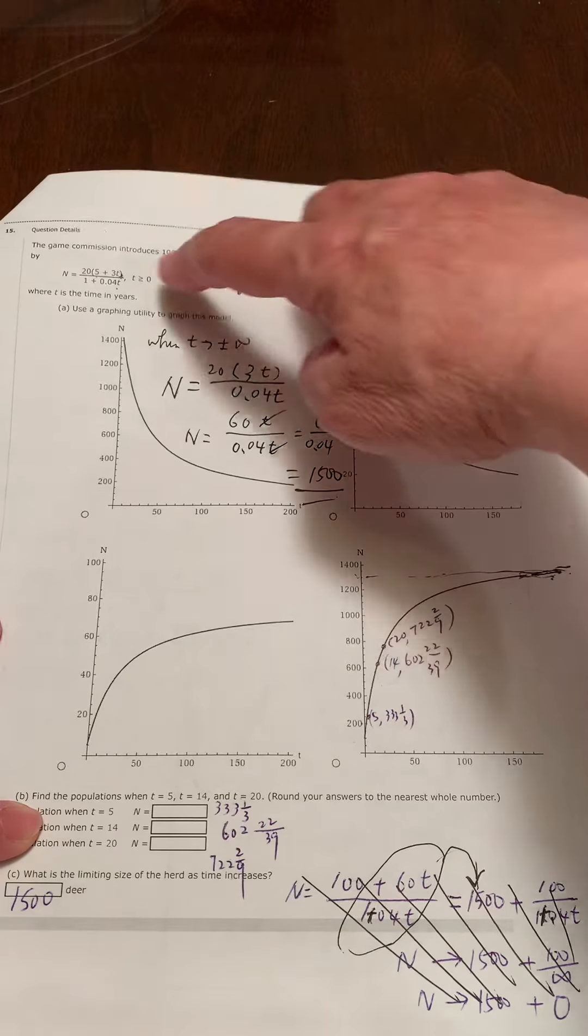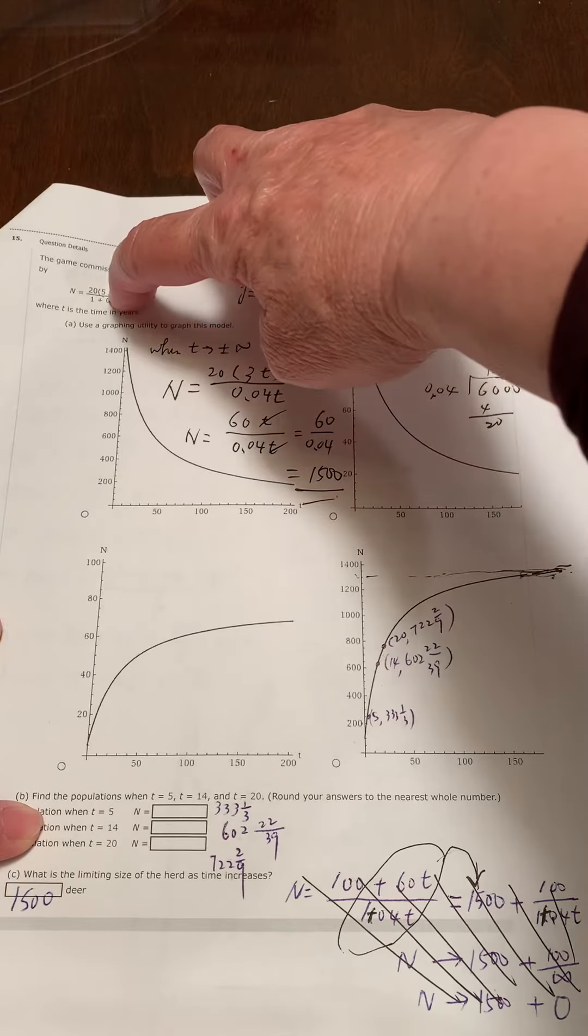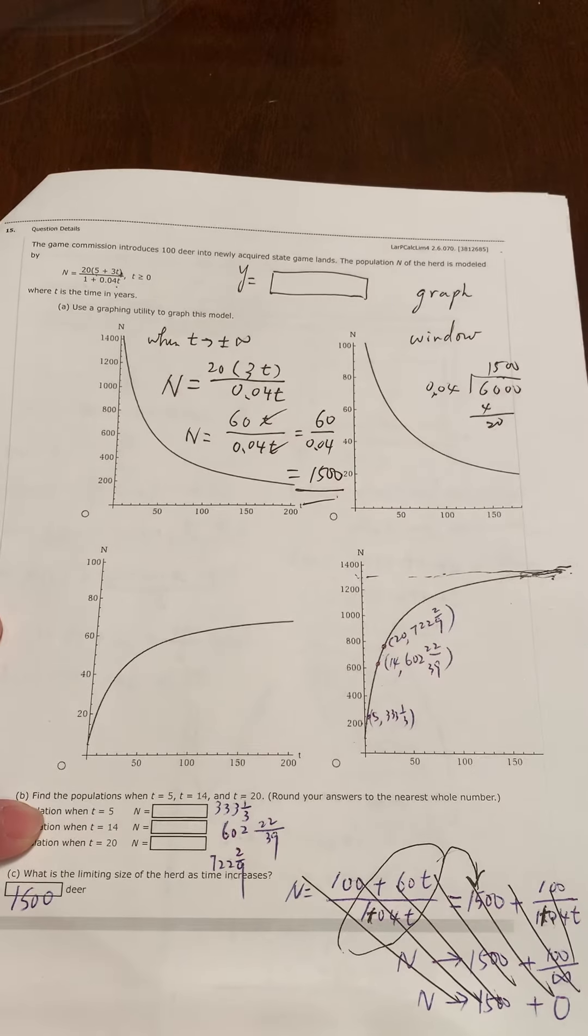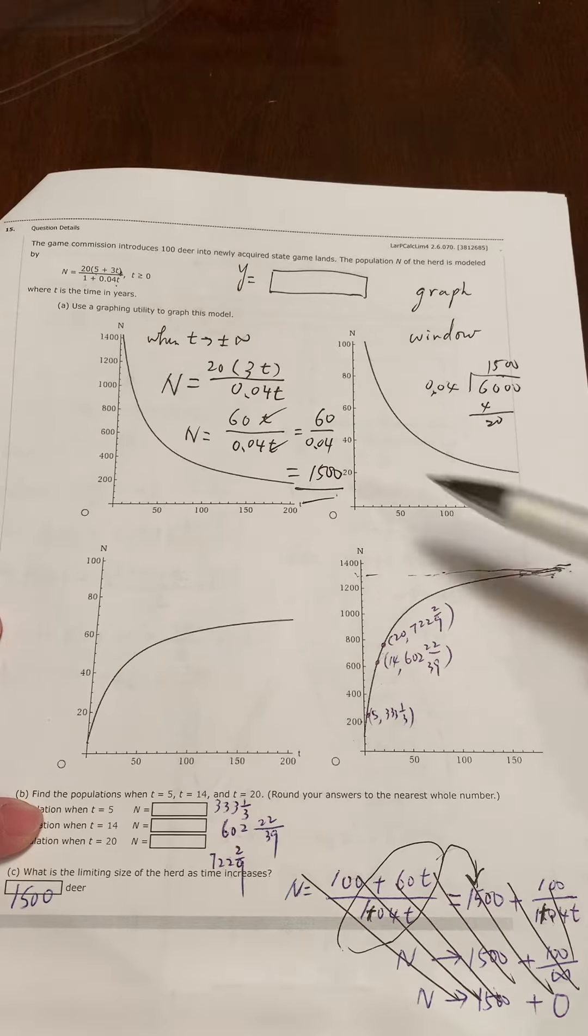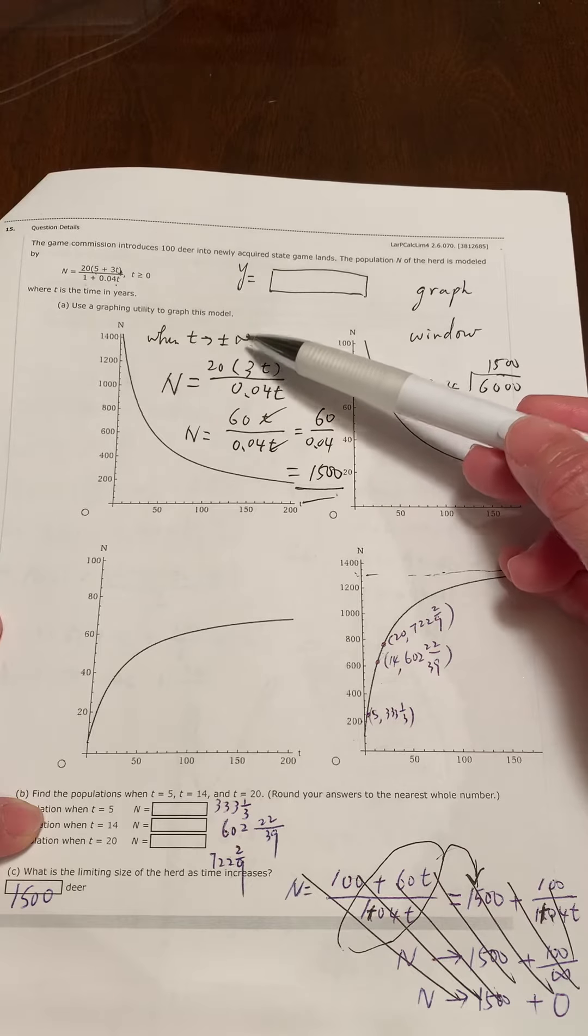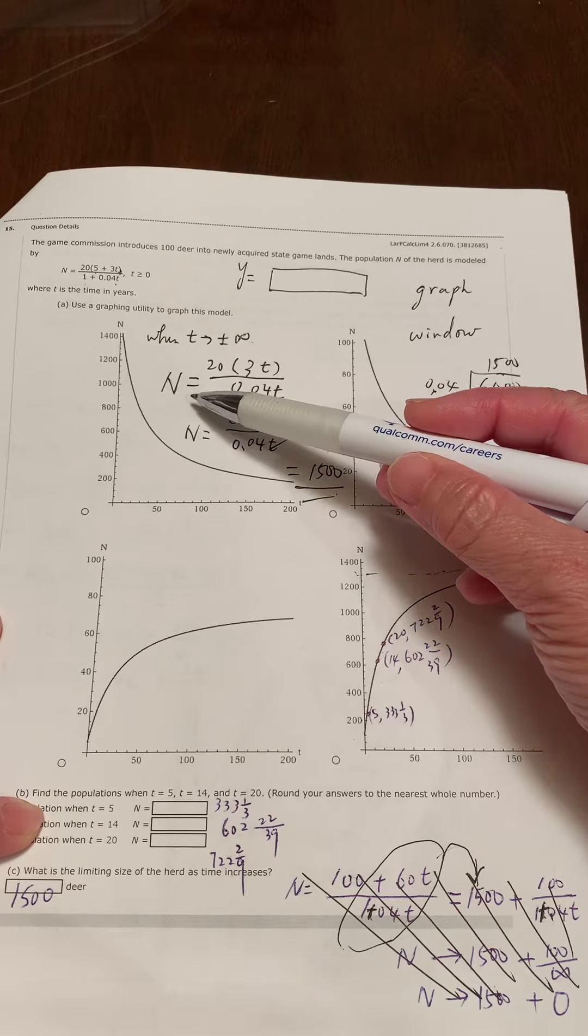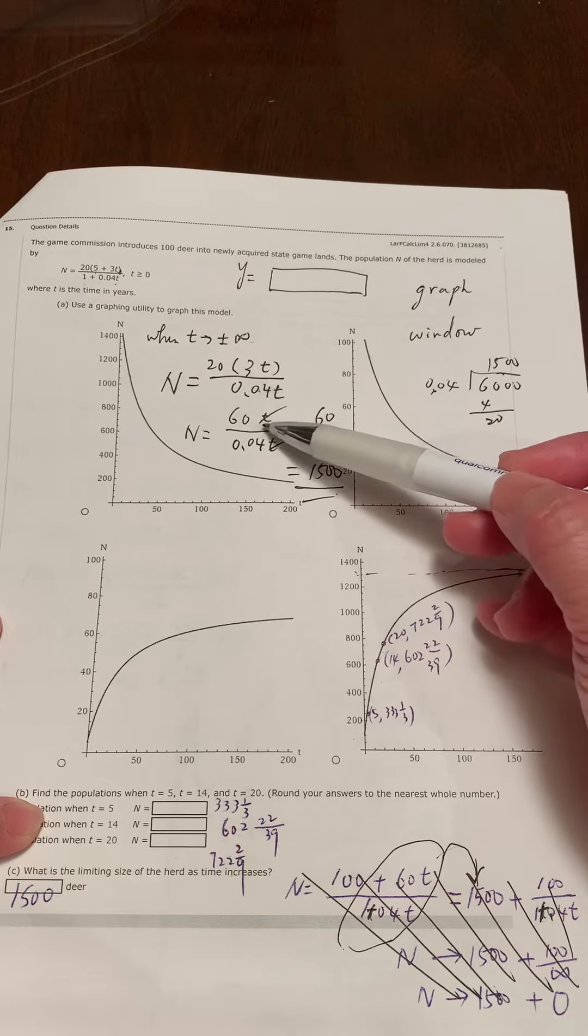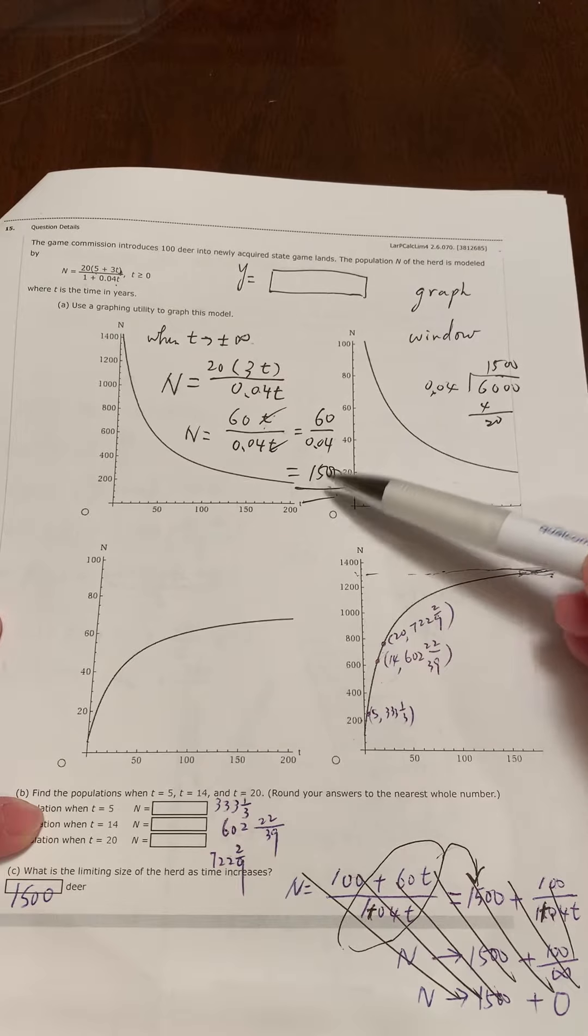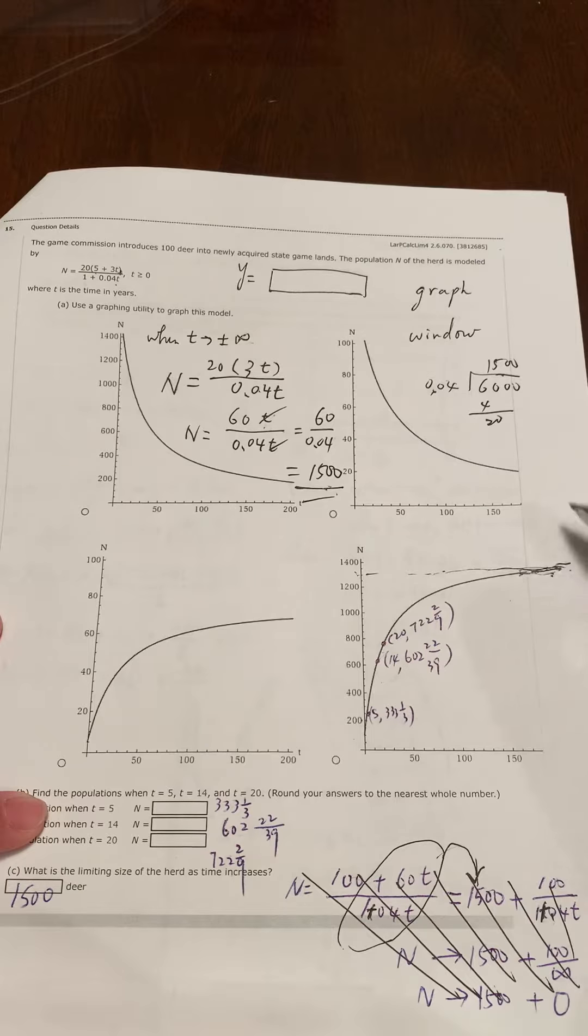If you think about when t becomes very big, when t is not very big it won't follow anything, just follows itself. But when t becomes very very big, you may ignore one, you may ignore five. This plus one plus five doesn't matter at all. Therefore, when t becomes positive or negative infinity, you may simplify the function like this.